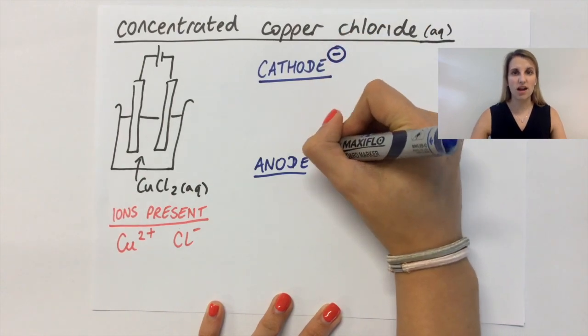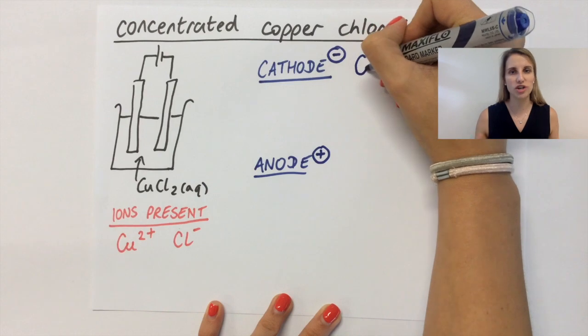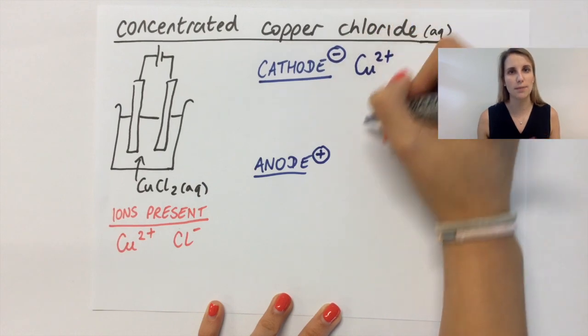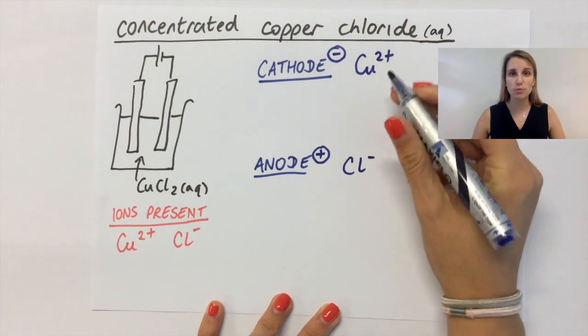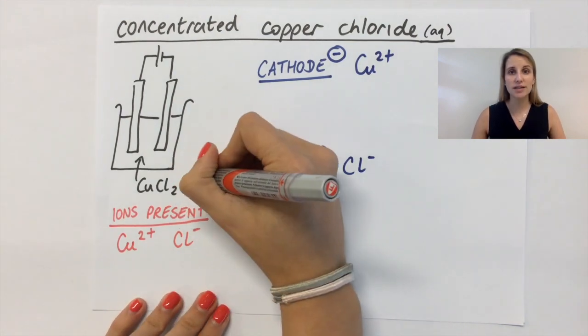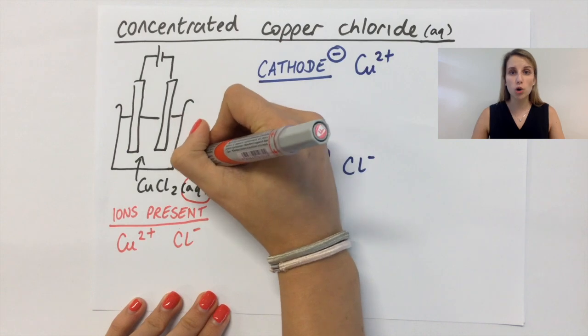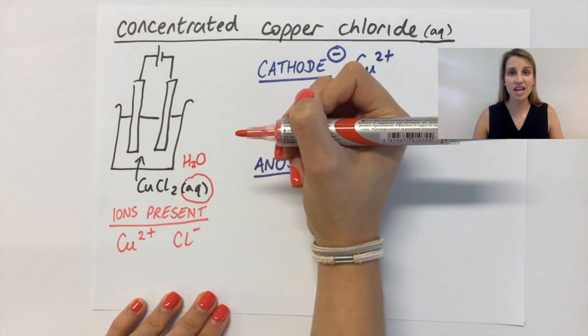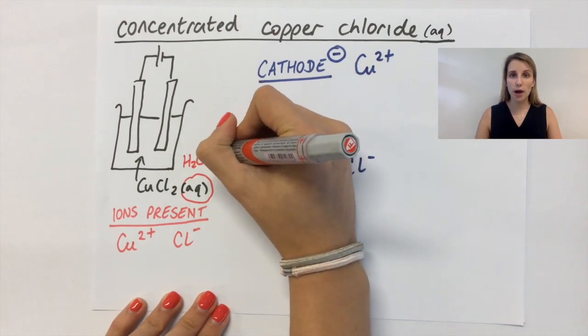And normally this would be kind of the end of your decision on which ions go where and what's going to happen next. But this time you've got water in there too, and water kind of messes things up a bit. Because in solution, water can break up into H+ and OH- ions.